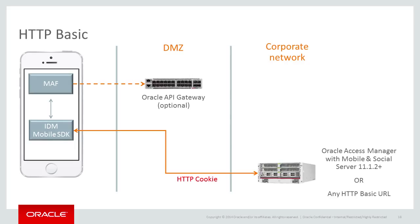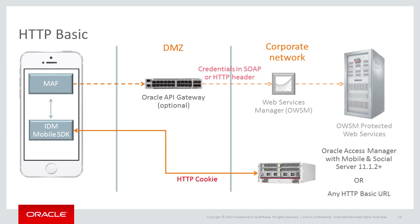In addition, API Gateway can expose SOAP services and JMS queues as REST web services, among other things. If the target web services are deployed on Oracle WebLogic Server, they can be protected by applying Oracle Web Services Manager security policies to them. Credentials will be passed in the SOAP or HTTP headers by the MAF application.